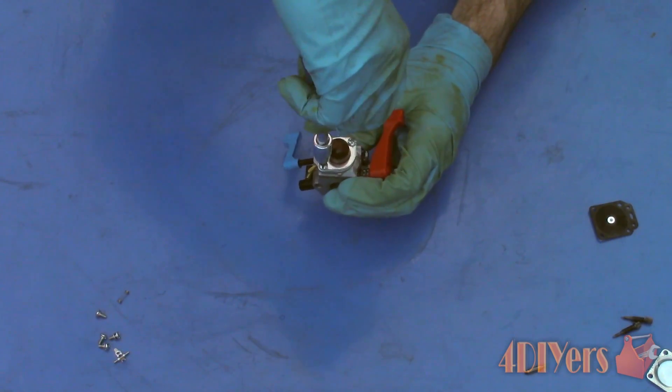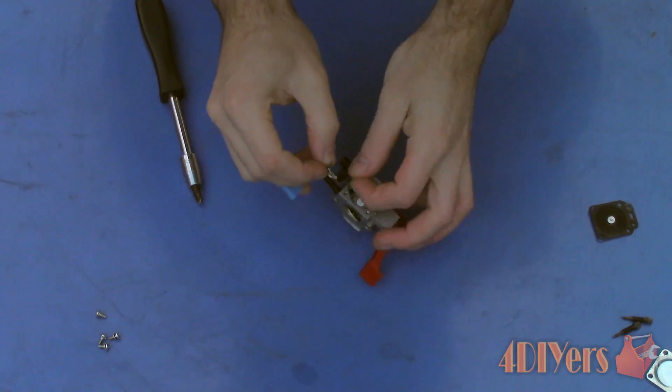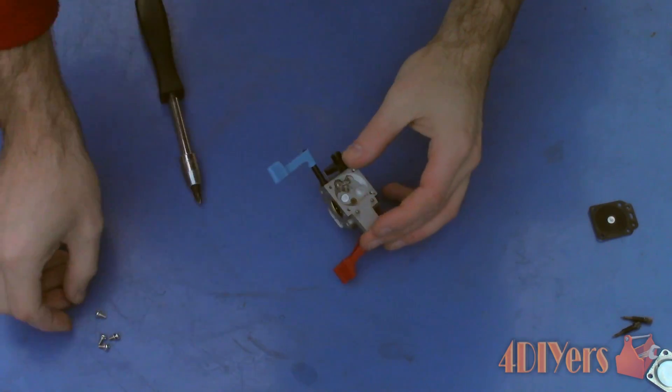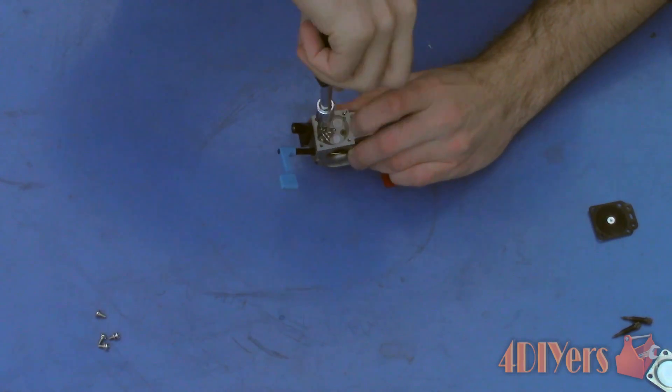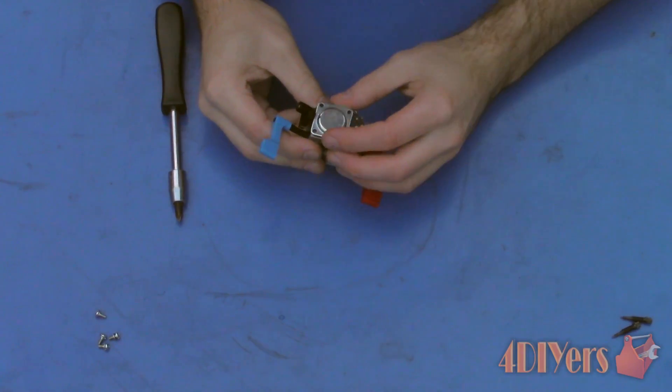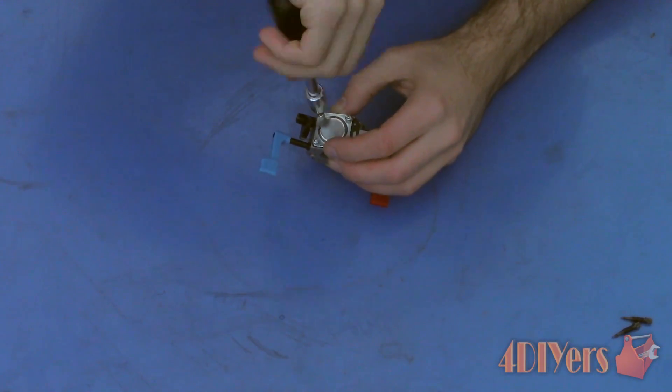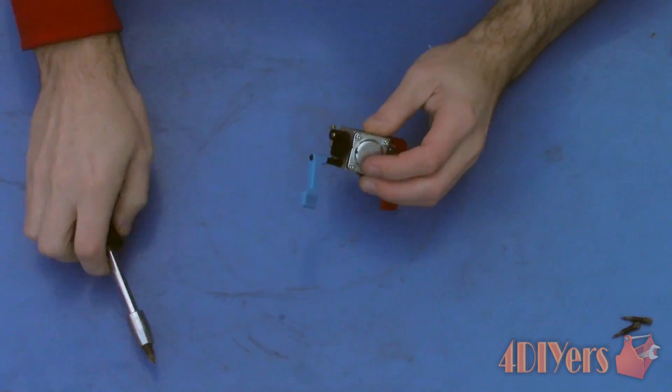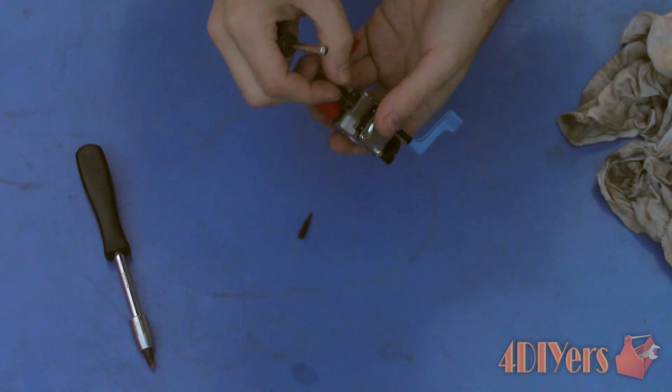Once done reassemble the carburetor. As for the settings on the jets you can set them to what they were previously as mentioned earlier or they could have been possibly wrong. Therefore we will be using a generic setting to get the engine started which will be three quarters of a turn for the low speed jet and one and a half turns for the high speed jet. Both jets need to be screwed in all the way and then backed off until the appropriate setting. If you find any seals that need replacing between the carburetor and engine block or intake manifold this would be a great time to replace those as well.